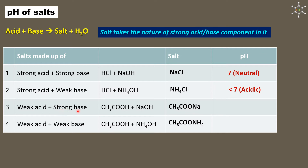Sodium acetate is made up of a weak acid and a strong base. Since the strong component is basic, the salt solution is basic with a pH greater than 7. Ammonium acetate is made up of a weak acid and a weak base; since both components are weak, it is not possible to predict the pH of this salt solution.